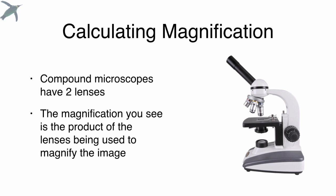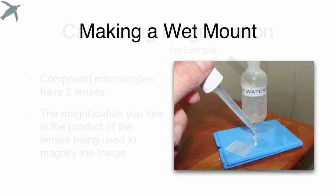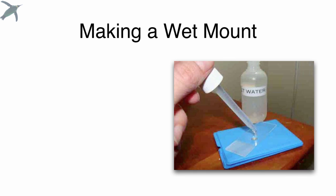Compound microscopes have two lenses, that's the name, and the magnification that you see is the product of the two lenses that you're using. For example, if you have an ocular lens that's 10x, and you happen to be using the 40x objective lens, you multiply those numbers together to get your total magnification, which would be 400x.